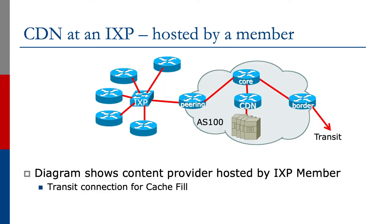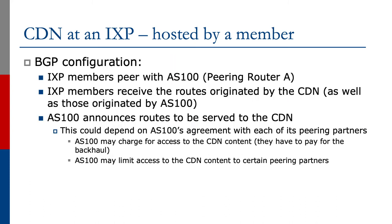The third example is where the CDN is hosted by a member. This is more common in the case of smaller Exchange Points or where members cannot work out how to host the CDN at the Exchange. Quite often it might be the major telecom operator or major transit provider that has enough traffic to justify hosting the CDN within their own network. The CDN connects into the network core of the IXP member, and the IXP member's transit connection is used for the cache fill. IXP members will peer with AS100, which is the peering router A shown in the diagram, and will receive routes originated by the CDN as well as those originated by AS100. AS100 announces routes to be served to the CDN, and this can depend on AS100's agreement with each of its peering partners.